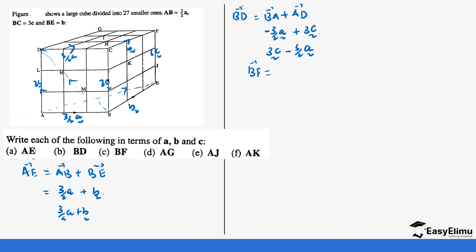For BF, it's also a diagonal cutting across to F. We go from B to E, then plus EF up to there. So BF equals BE plus EF, which is b plus 3c.